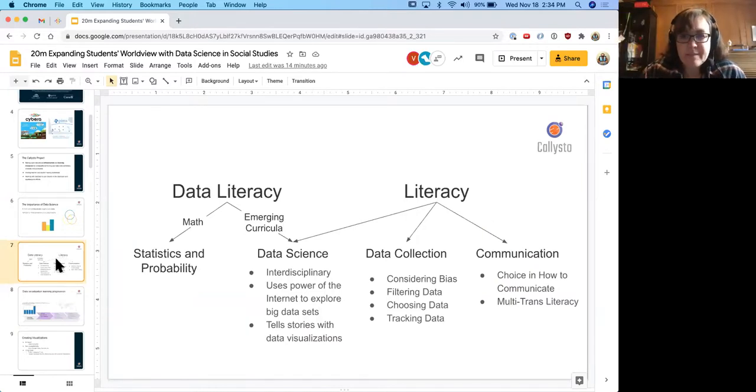When I came in to help as an educational specialist with Callisto, I wanted to think about how stereotypical math and computational thinking really connect with humanities. It's about connecting the math and emerging curricula with literacy, specifically data literacy. Data science is very interdisciplinary, just like what we do in humanities. It uses the power of the internet to explore big data sets and there's a focus on telling stories with data visualization. Most importantly, it's about how we communicate meaning, the literacy part, how we choose to communicate this data. That's what we call multi and trans literacy.